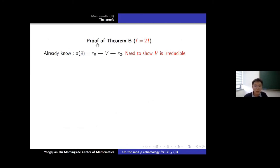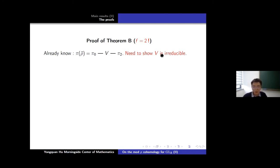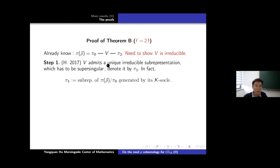Next I explain the proof of Theorem B. Recall we assume f=2 and want to show π(ρ̄) has length 3: π_0, π_1, π_2. By the proof of Theorem A, we already know the socle is π_0 and the cosocle is π_2. So there is something in the middle denoted V, and the essential part is to show V is irreducible and supersingular. Step 1: we show (this is older work of myself) that π(ρ̄)/π_0 has a unique irreducible subrepresentation, which must be supersingular — we denote this by π_1.